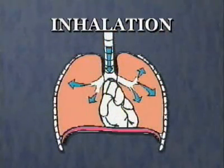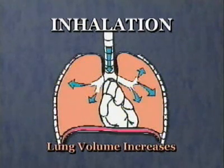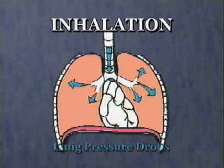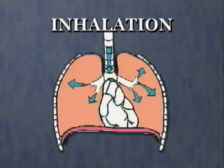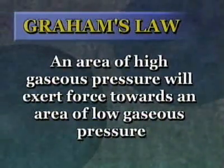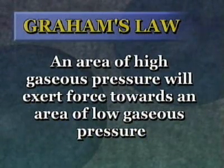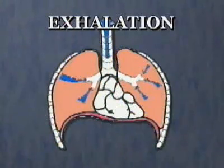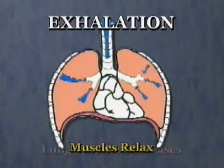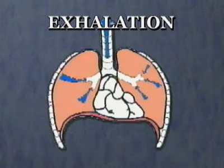During inhalation, the muscular action of the diaphragm along with the intercostal muscles causes lung volume to increase, with a corresponding drop in lung pressure. This allows air to enter the lungs under its own pressure, according to Graham's Law, which states that an area of high gaseous pressure will exert force towards an area of low gaseous pressure. During exhalation, the muscles relax and lung volume decreases, and air is exhaled, again in accordance with Graham's Law.